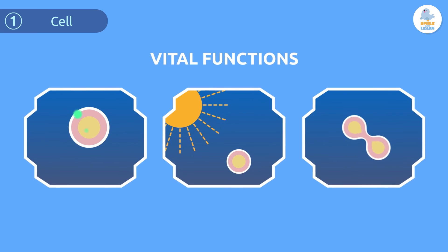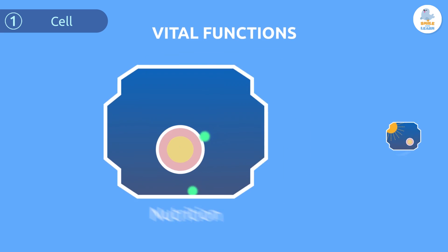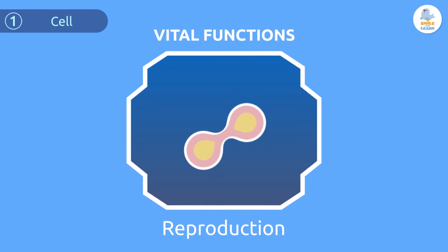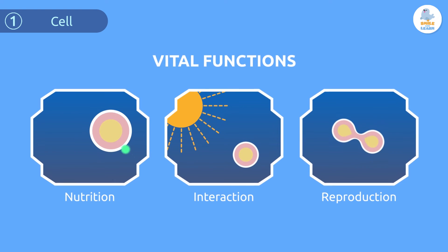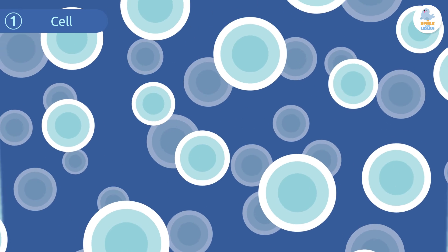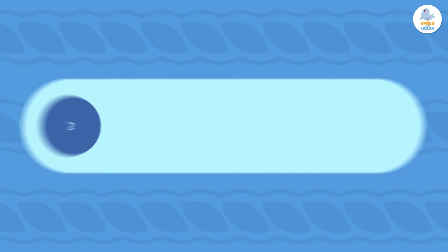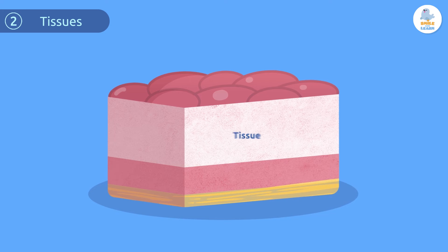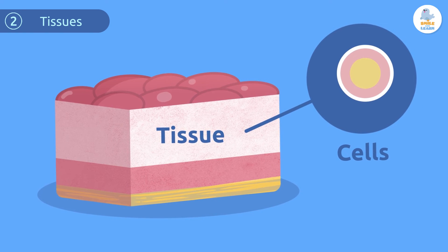The vital functions of a living being are nutrition, interaction, and reproduction. The cell is the smallest basic unit that fulfills the vital functions. We're all made up of millions of cells!